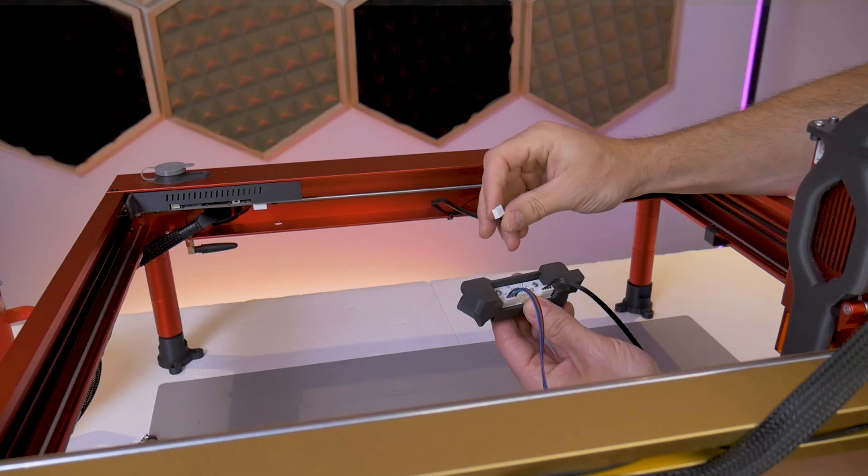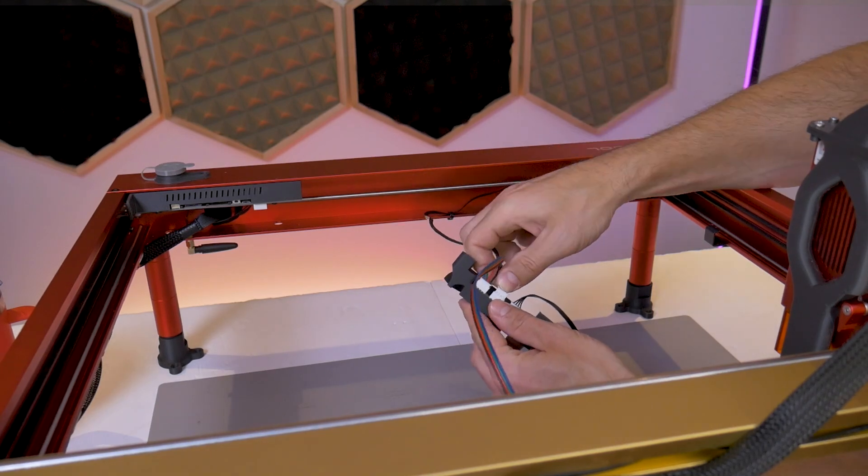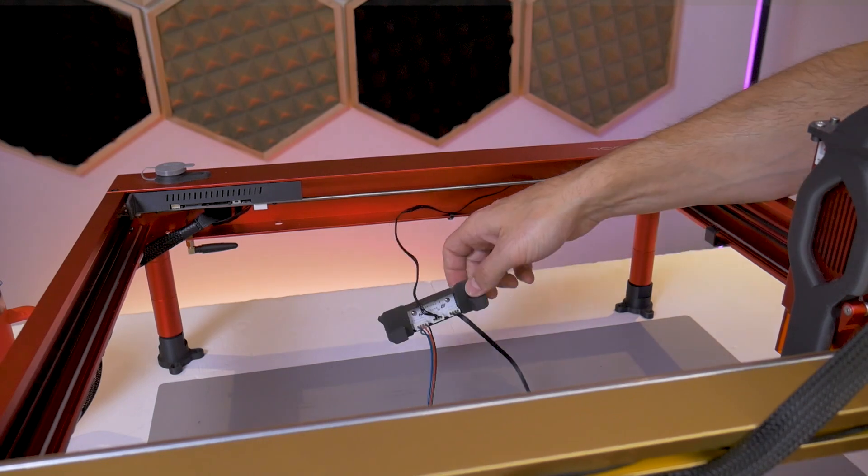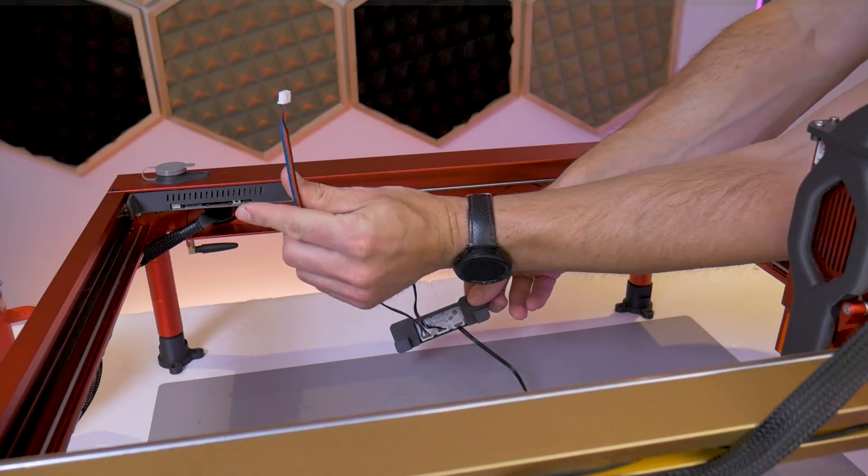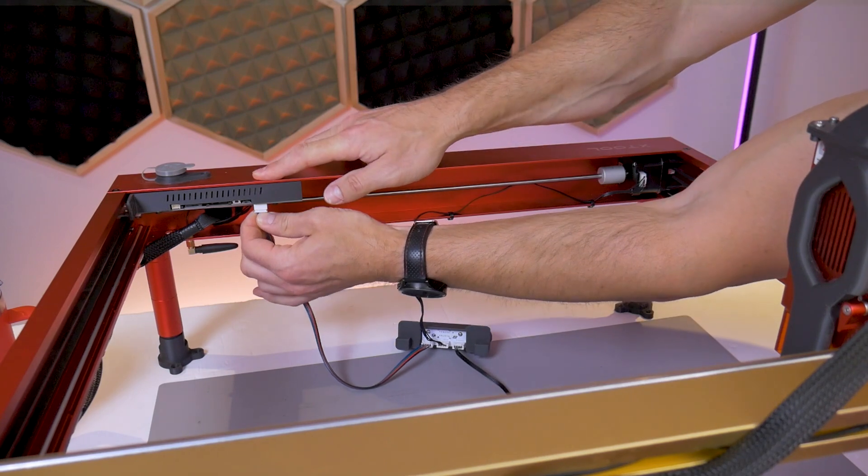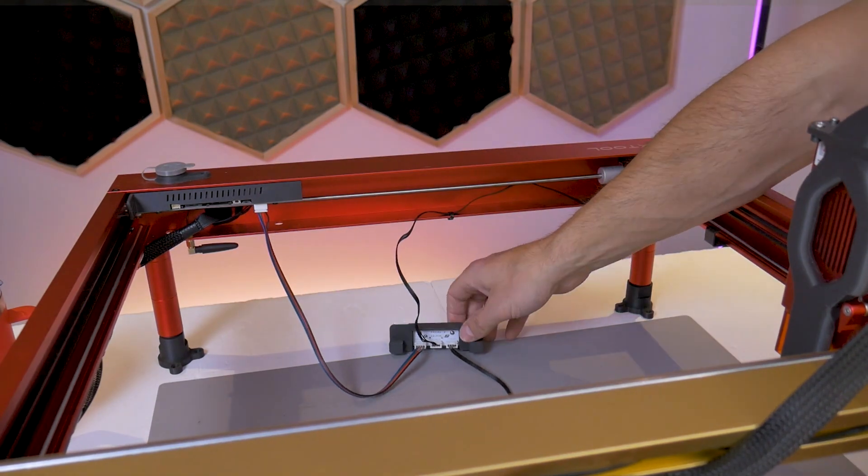Now we can take the Y motor cable that we just unplugged and connect that to the middle connector labeled 'to Y motor.' Then we can take the included wiring harness that we plugged into the connector labeled 'from machine' and plug that into the main board.